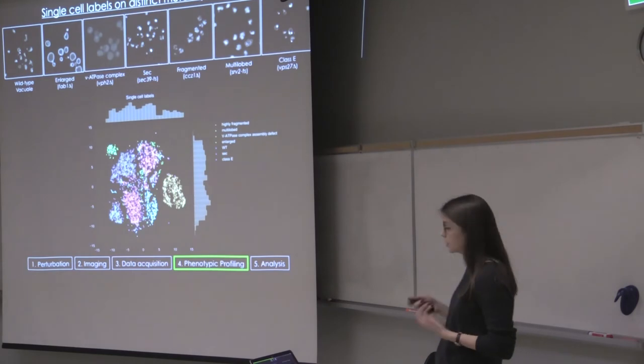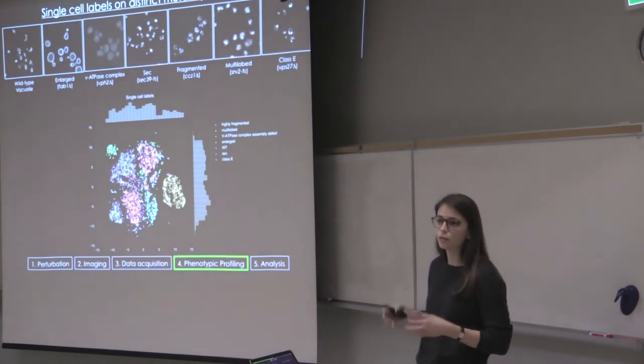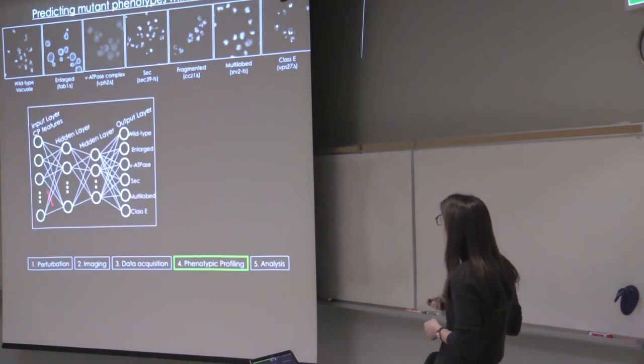When we plot the cell profiler features for each of these classes on a t-SNE space, we can see different clusters that are occurring here. So we know that through non-linear methods, we can do this multi-class classification. For that, I'm using a simple neural network. It's fully connected with two hidden layers. And I'm inputting the cell profiler features.